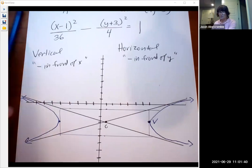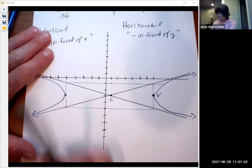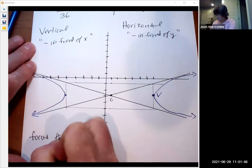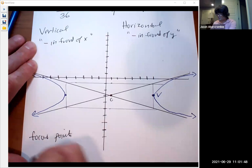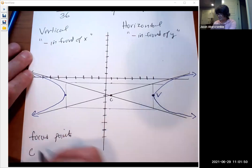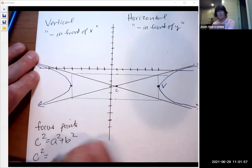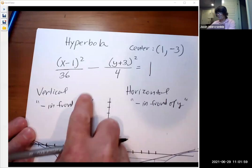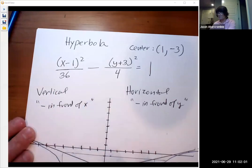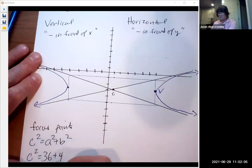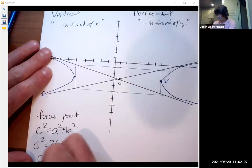The last thing I want to do are focus points. So focus points are C away from the vertex. So C squared in this case is A squared plus B squared. C squared, it was 36 plus 4 is what A squared and B squared are going to be. It doesn't matter which one's which.